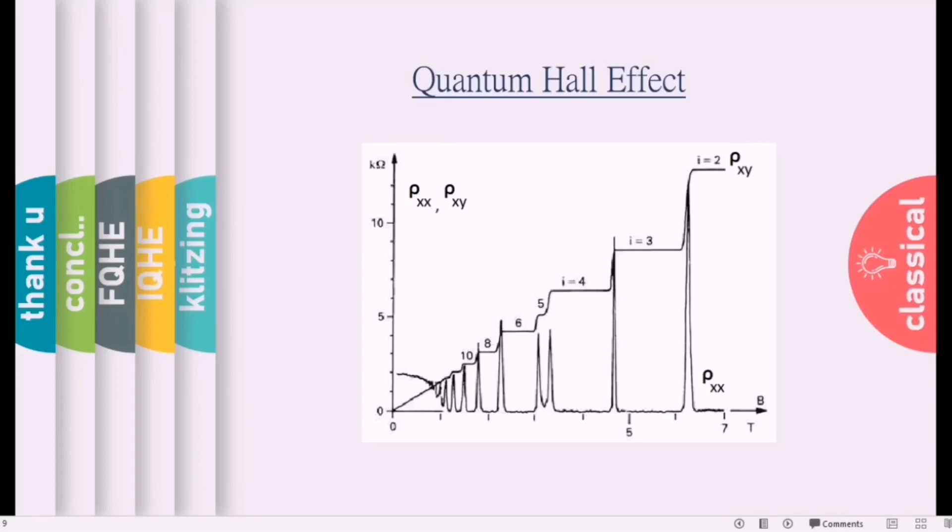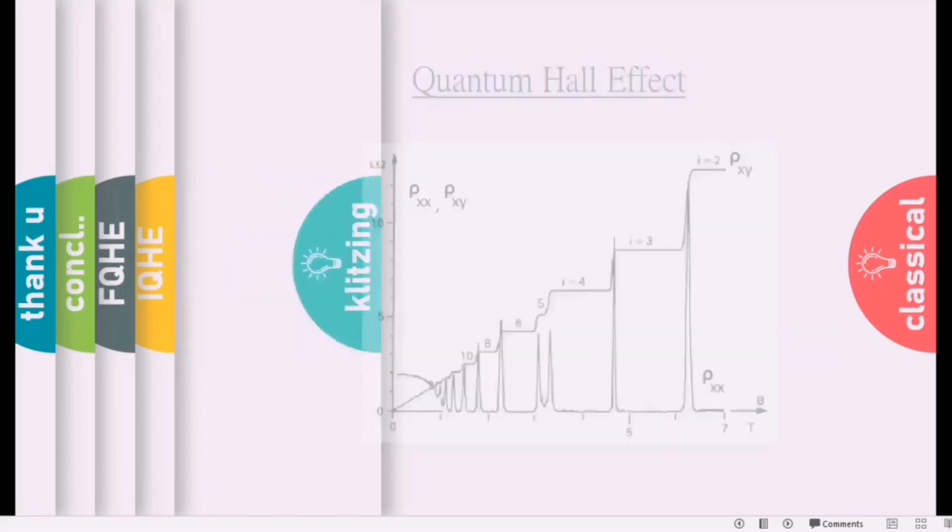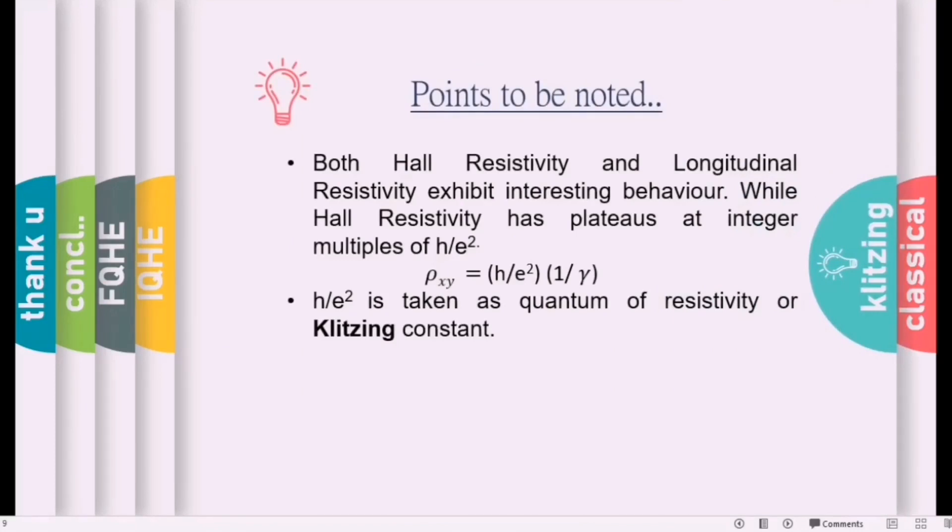So there are some interesting features of quantum Hall effect which are very important. We can summarize it: both Hall resistivity and longitudinal resistivity exhibit interesting behavior. While Hall resistivity has plateaus at integer multiples of h over e². Hall resistivity ρxy is given as (h/e²) times (1/γ), where γ is the integer values 1, 2, 3, and so on. And h/e² is taken as quantum of resistivity, also known as Klitzing constant, because this quantum Hall effect was first discovered by von Klitzing. Later he was awarded with a Nobel Prize for this discovery.